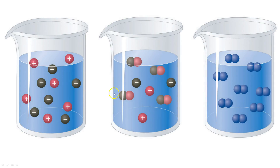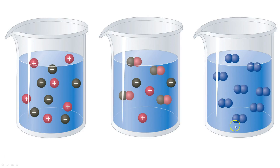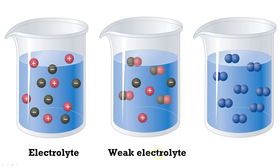Here I have three solutions. The first shows strong dissociation — everything is separated with positive and negative charges all over. The second shows weak dissociation — a little bit of positive and negative. Finally, the third shows no dissociation whatsoever; when those compounds are put in water, nothing changes. This means the first is a strong electrolyte, the second is a weak electrolyte, and the third is a non-electrolyte.